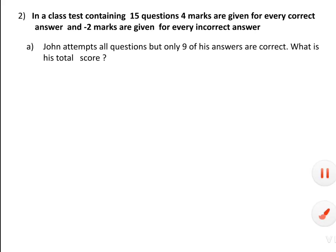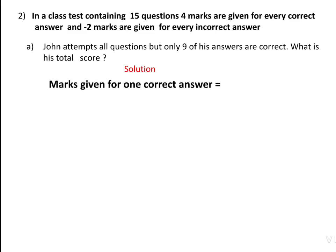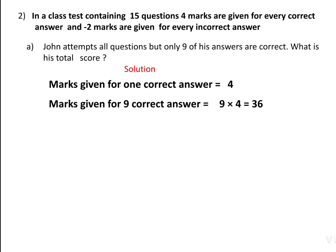John attempts all questions but only 9 are correct, so the others are incorrect — that is, 6 answers are incorrect. Solution: Marks given for 1 correct answer = 4. Marks given for 9 correct answers = 4 × 9 = 36. So John got 36 marks for correct answers. But 6 answers are incorrect, so some marks are decreasing.